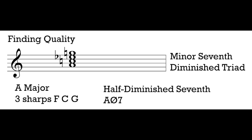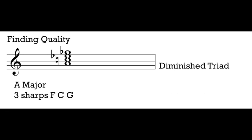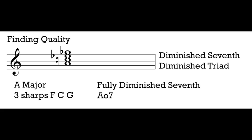I kept the diminished triad — A, C, E flat — on the bottom, but now I've got a G flat above. G natural was a minor 7th, but I've made that interval one half step smaller. A half step smaller than a minor 7th is a diminished 7th. We now have a chord with both a diminished triad and a diminished 7th — this is the fully diminished 7th chord. Our half diminished 7th only has the triad diminished with a minor 7th, but the fully diminished 7th chord has both parts diminished. We abbreviate this using a circle — the same symbol we use for diminished intervals and diminished triads.